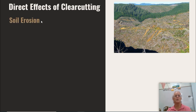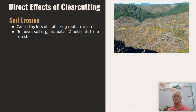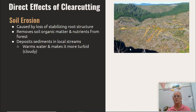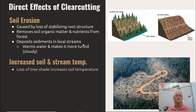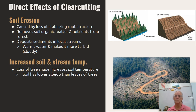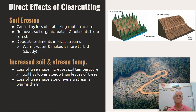Direct effects of clear cutting: it causes soil erosion — because there are no roots to hold it in. It removes organic matter and nutrients from the forest, and deposits the soil down into streams. Doing that makes the water warmer because it has a lower albedo effect and higher turbidity, which means it's going to absorb more heat from the sun. There's increased soil and stream temperature and loss of tree shade. Soil has a lower albedo, so it absorbs more of the light's energy, while trees reflect more. Loss of tree shade along rivers and streams warms up the streams, especially combined with turbidity. Erosion of sediment into rivers also warms them.